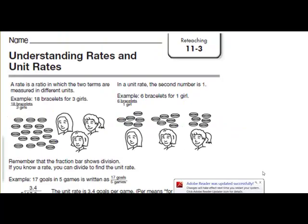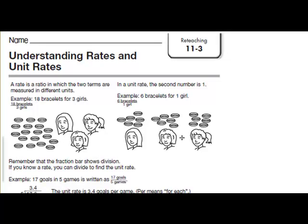Let's take a look at some examples from our homework. A rate is a ratio in which the two terms are measured in different units. For example, 18 bracelets for three girls. So we write bracelets to girls, 18 to 3. We have 18 bracelets and three girls. In a unit rate, the second number is one, so it's a ratio up to one. We forgot our labeling — bracelets to girls, 18 bracelets to three girls.